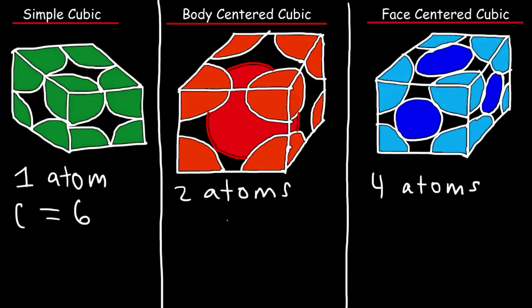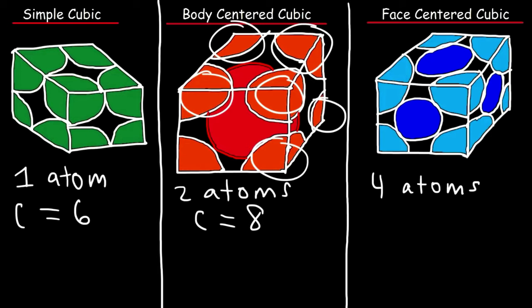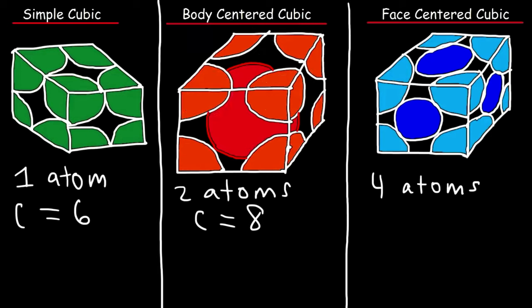For the body centered cubic structure the coordination number is 8. If you look at the atom in the middle you can see that it's attached to 8 other atoms — 1, 2, 3, 4, 5, 6, 7, and the eighth one is in the other corner that you can't see based on the way it's drawn. The coordination number for the face centered cubic structure is 12.